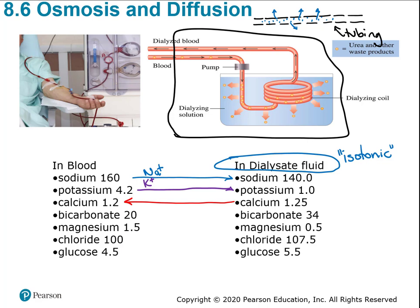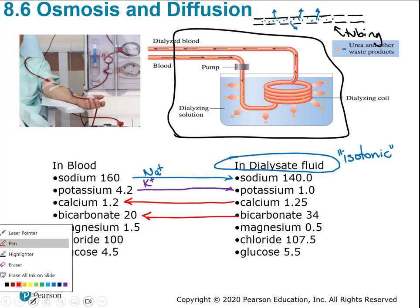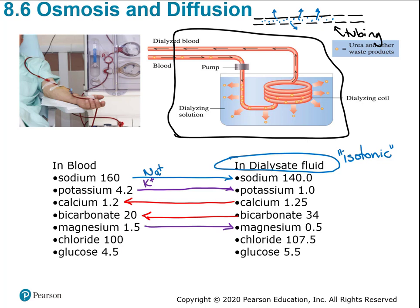Bicarb is higher in the dialysis fluid than in the blood, so it diffuses into the blood. Magnesium moves from 1.5 in the fluid to 0.5 in the blood. Glucose at 5.5 in the dialysis fluid — roughly a blood sugar of 80 — can actually increase blood sugar if a patient comes in low. So movement can go in both directions depending on concentration gradients.